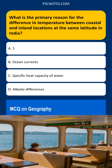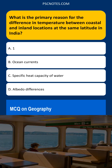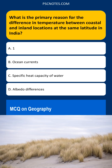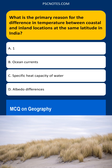Water has a much higher specific heat capacity than land. This means that water can absorb and release a significant amount of heat without undergoing a large temperature change. Coastal areas, being near large bodies of water, experience a moderating effect on temperature because the water absorbs heat in summer and releases it in winter, reducing temperature extremes.